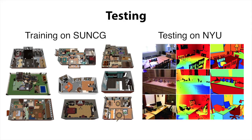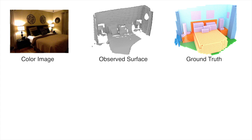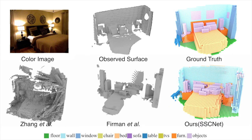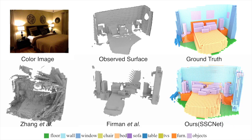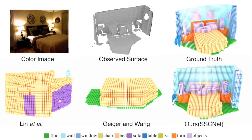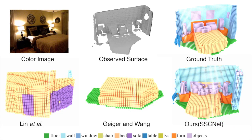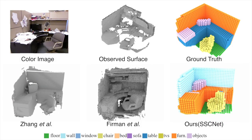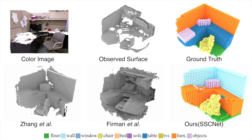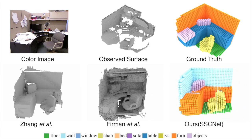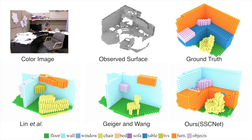We train our SSCNet on the synthetic training data from SunCG and test it on the real-world depth images of the NYU dataset. This is the visible surface of the input scene and its ground truth volume. We first compare with scene completion approaches that do not consider object semantics. Then we compare with the alternative approaches for the semantic scene completion task. Here are more examples. Overall, our predictions are more accurate in terms of geometric completion and semantic labeling.